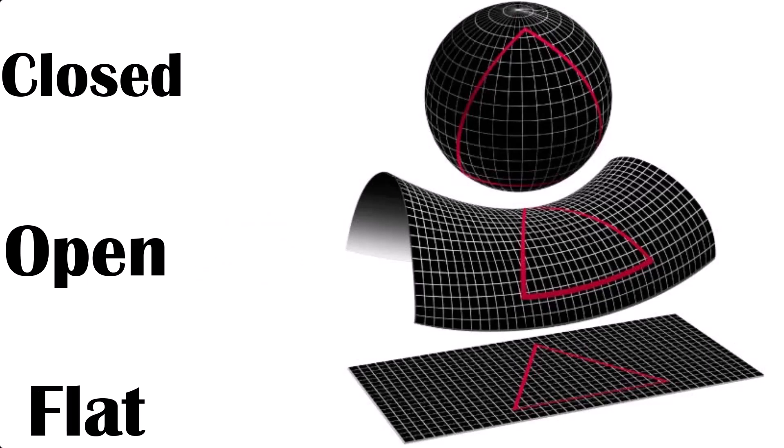This is where K comes in. K, which is the curvature, can take one of three values. 1 for a closed universe, 0 for a flat one, and minus 1 if it's open. Ultimately, K will decide how the universe ends. Only closed universes can collapse back on themselves, and open universes expand forever. The flat universe will expand forever, but the rate of expansion will decelerate and eventually sit at a fixed rate.